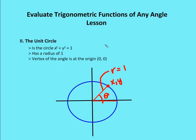Now we're going to talk about what's called the unit circle. We've talked about creating a circle and using the Pythagorean theorem to define triangles as we rotate the terminal side around the circle. The unit circle simply says that the radius of the circle is going to equal one. So if I write an equation for this circle, it would be x squared plus y squared equals one — the standard form of a circle centered at the origin with a radius of one.